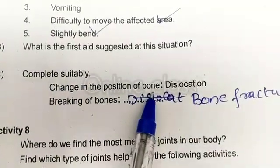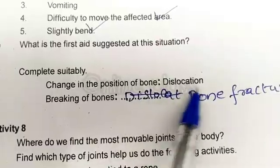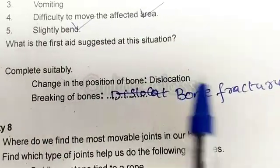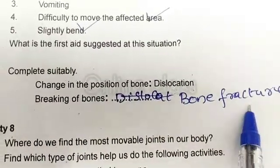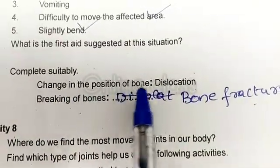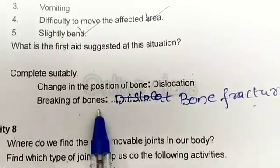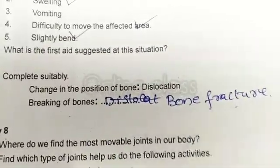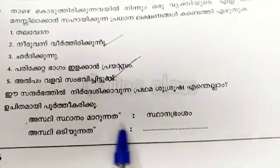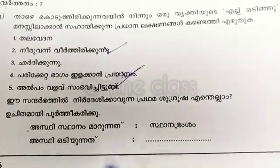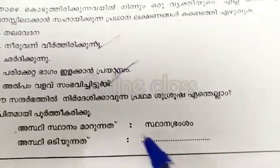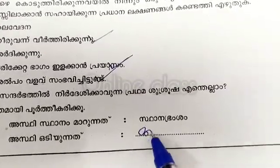Change in the position of bone is called dislocation. Breaking of bones is called bone fracture. Asthi sthāna bhraṃśam refers to dislocation; asthi bhaṅgam refers to bone fracture.